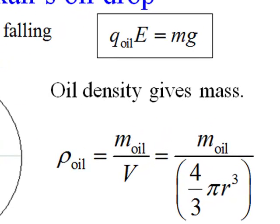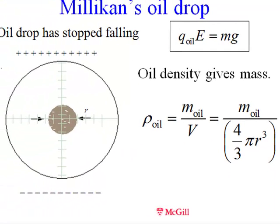The mass is easily obtained because the density of oil is known. Density is the ratio of mass to volume. Oil floats on water, so it has a density less than water. The density of water is one gram per milliliter, and the density of oil is about 0.8 grams per milliliter. Millikan knew the density of his oil and could calculate the mass by measuring the oil drop's radius through his calibrated microscope.